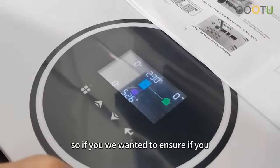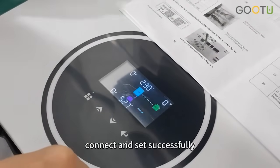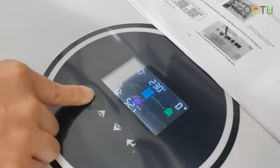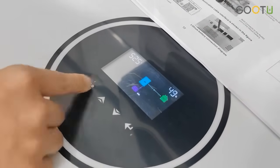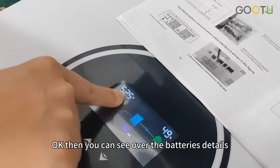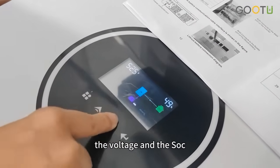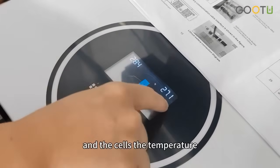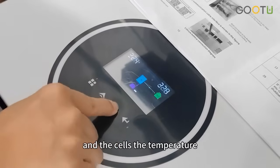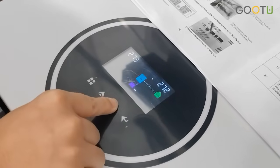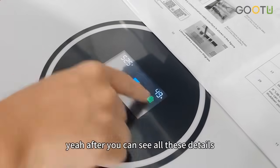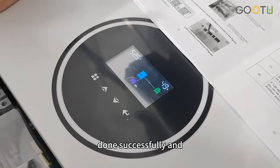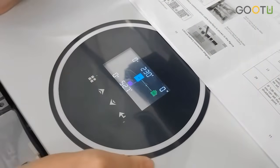So if you want to ensure if you connect and set successfully, you can press this for longer time. Then you can see our battery's details: the voltage, the SoC, the amperage, the cells, the temperature, and the cell voltage. After you can see all these details, which means you have done successfully and communicated successfully with our battery.